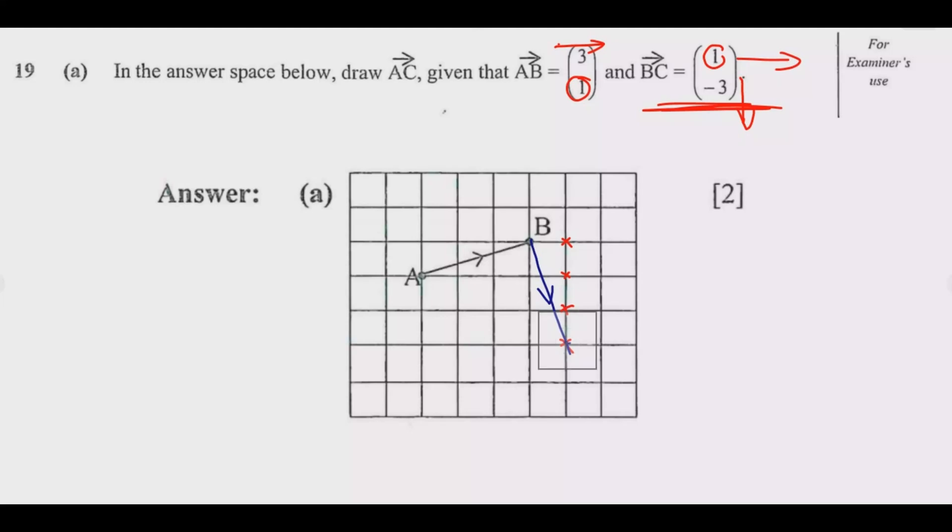I can use blue, so this is BC. This is up to C. Then the question is we need to draw AC, so AC is just joining the two lines. So this line, that's AC. So once you do that you are good to go, then you get these two marks. Remember we're just drawing, the question is asking us just to draw.